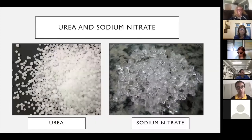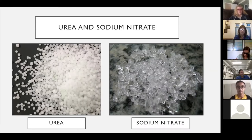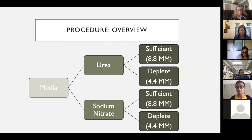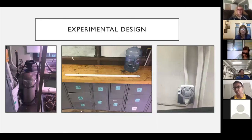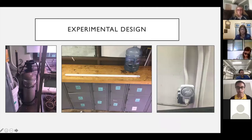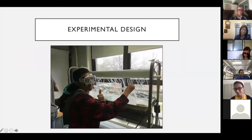I decided to use urea and sodium nitrate for my two different nitrogen sources. I chose urea because it's found in human waste and therefore could be found in wastewater. I chose sodium nitrate because in an artificial marine environment it could supplement the amount of sodium in the stock. Here's my procedure overview: first I chose the media — urea or sodium nitrate — then whether it would be nitrogen-starved. The sufficient level was 8.8 millimolar from a stock solution provided by the University of Texas. I decreased this by half to create my depleted group. I used the same amount of CO₂ per day — two minutes a day — the same light for all samples, and 12 hours light, 12 hours dark.